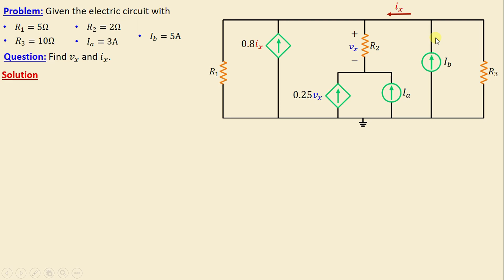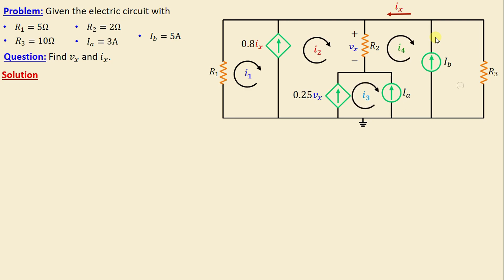Now let's proceed to assign the mesh currents in this network. I will consider I1 as the current in mesh one, I2 as the current in mesh two, I3 as the current in mesh three, I4 as the current in mesh four, and I5 as the current in mesh five. All the currents are chosen in the clockwise direction.